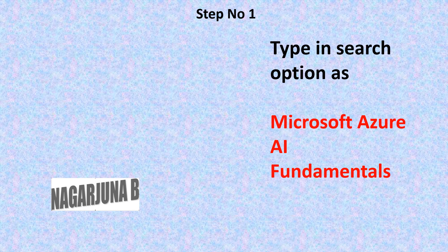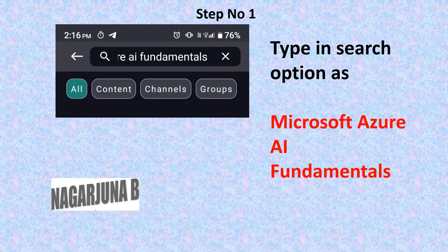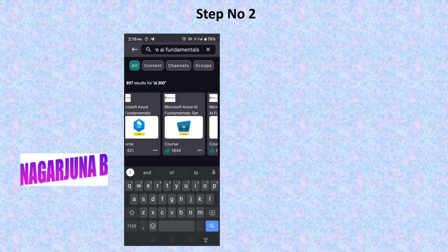Open the Prime Future app. In the search option, type 'Microsoft Azure AI Fundamentals'. It will show the next screen on your mobile displaying the Microsoft Azure AI Fundamentals course. You need to select the option of Microsoft Azure AI Fundamentals.